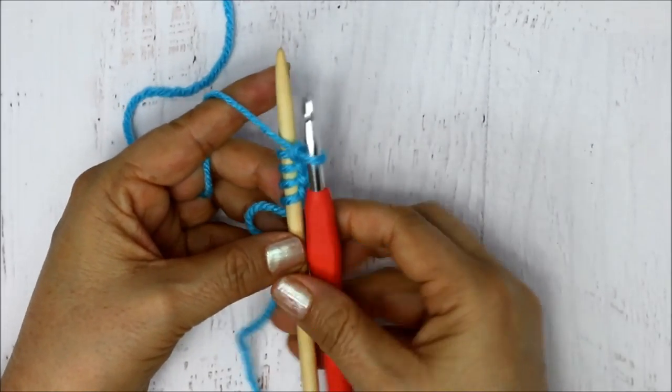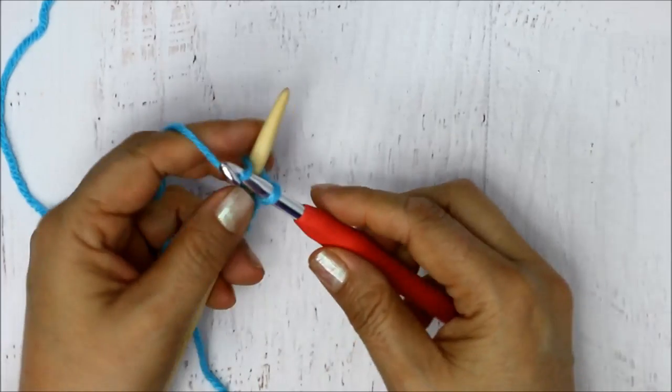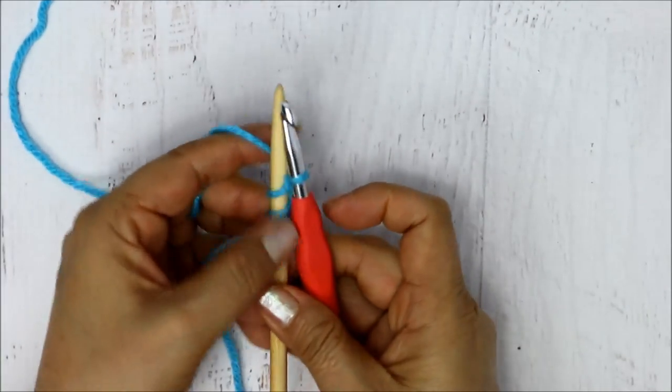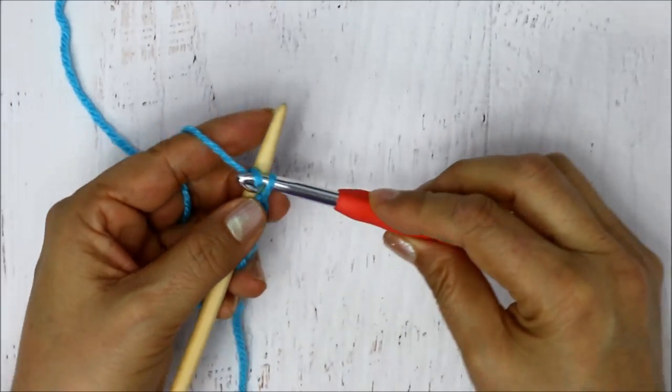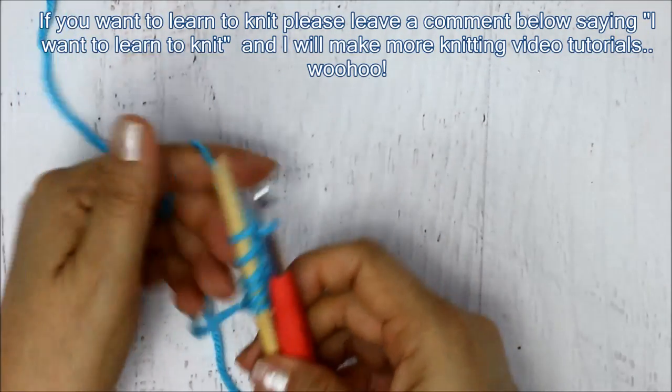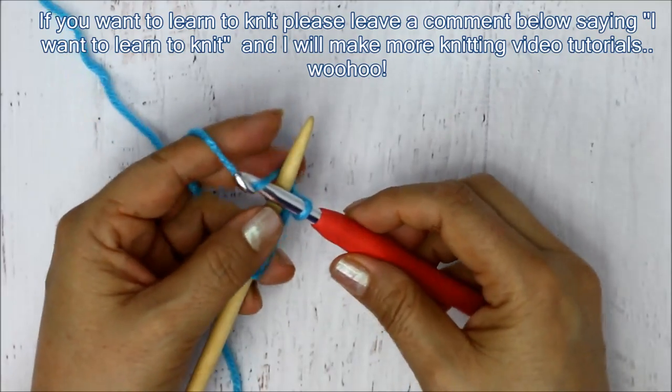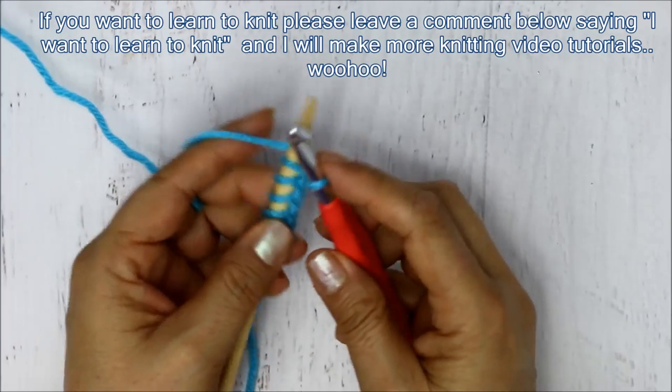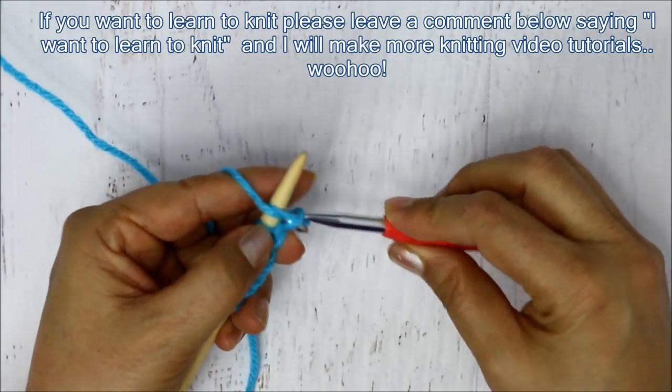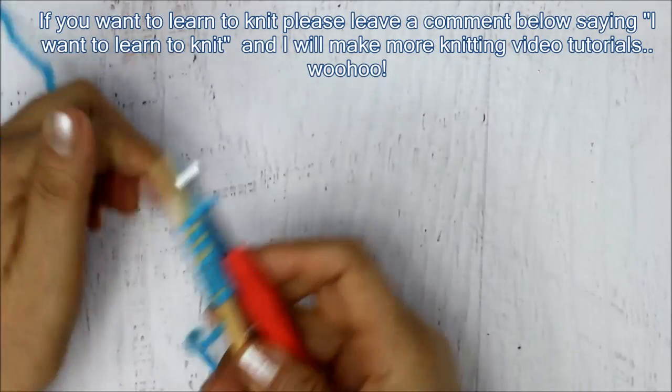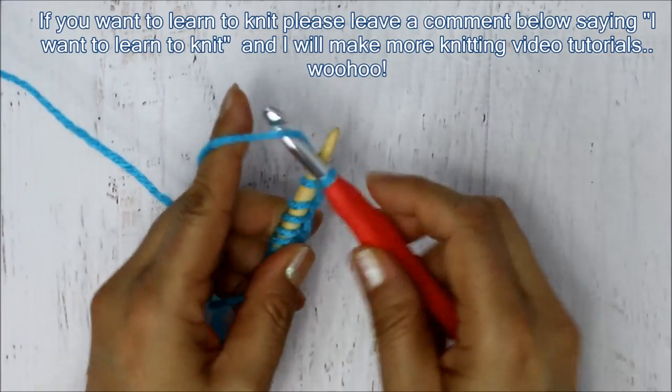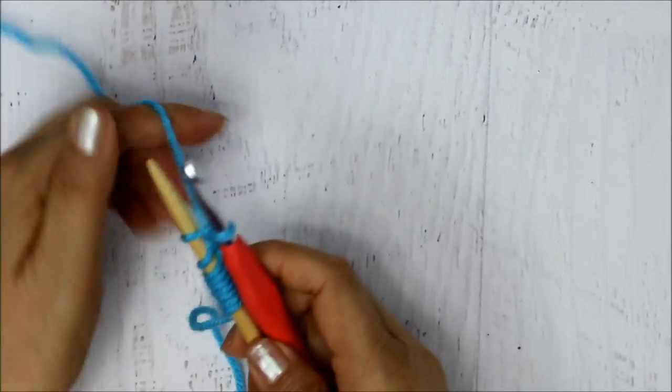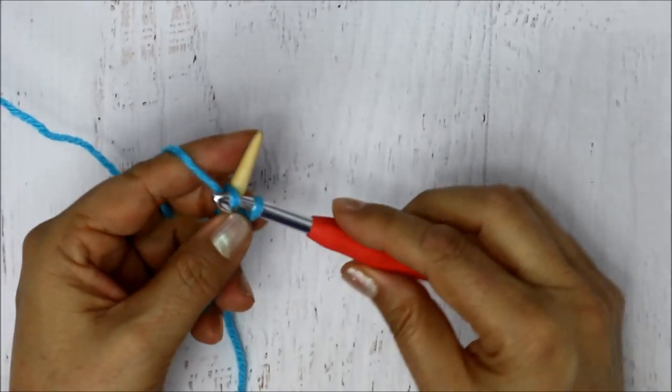So that is how you just continue doing it. Bring your yarn to the back, grab, bring through. Yarn to the back, grab your yarn, bring it through the loop. Continue this pattern: yarn to the back, grab the yarn, and pull it through, repeating the motion to create additional stitches.